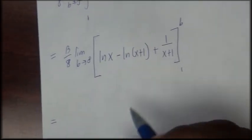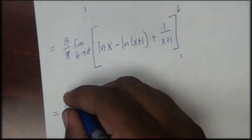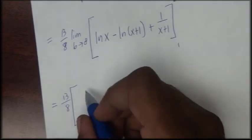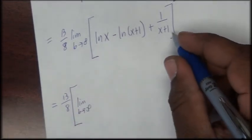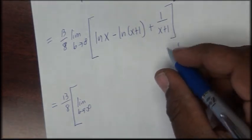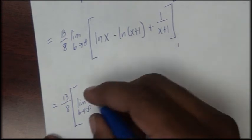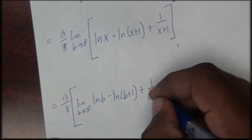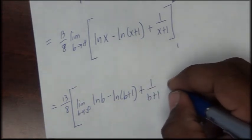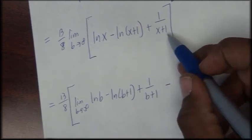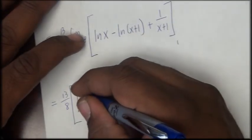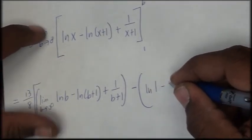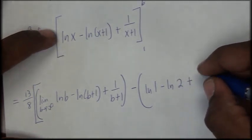Next I'll use the fundamental theorem of calculus. So we have 13 over 8 times the limit as b approaches infinity. I'll substitute in b: natural log of b minus natural log of (b plus 1) plus 1 over (b plus 1). Minus, substituting in 1 for x: the natural log of 1 minus the natural log of 2 plus 1 half.